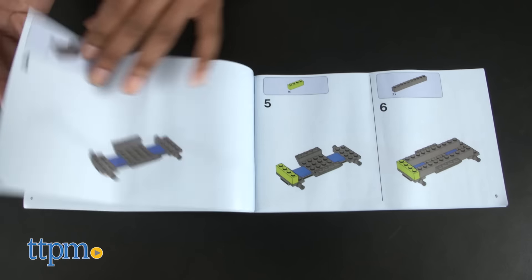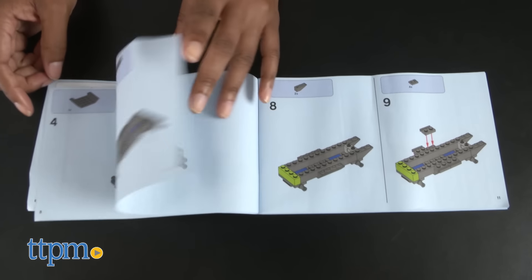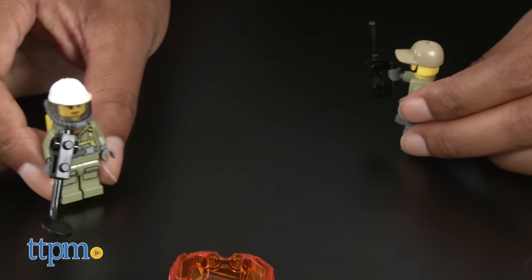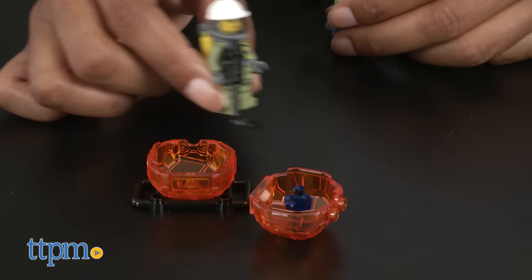This set took us about 20 minutes to build. Instructions are included. Kids will love building this LEGO City set and pretending to be an adventurer, archaeologist, and coming up with their own crazy explorer adventures.